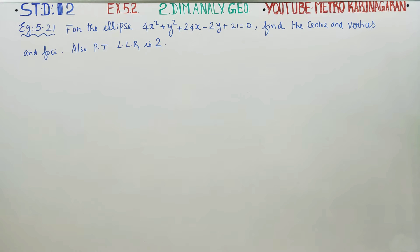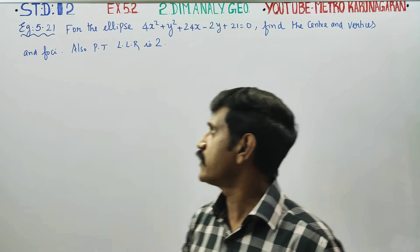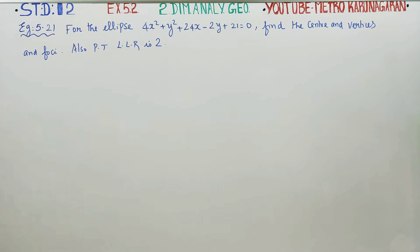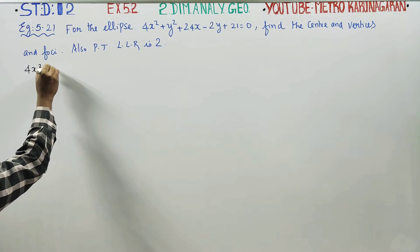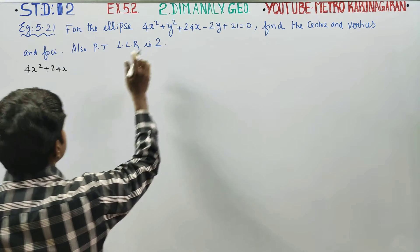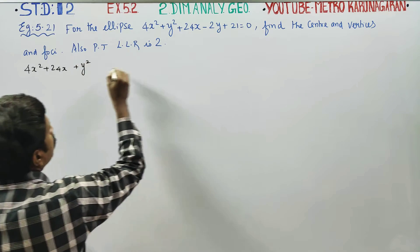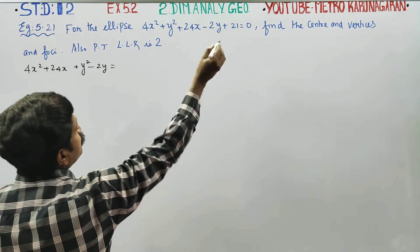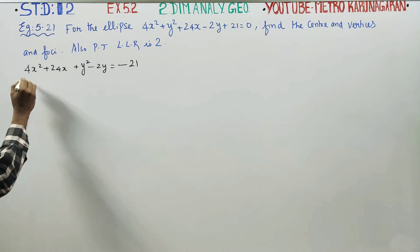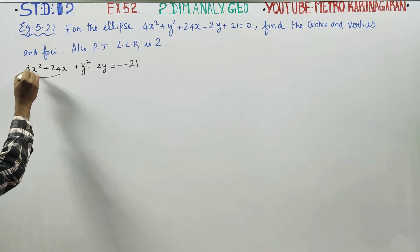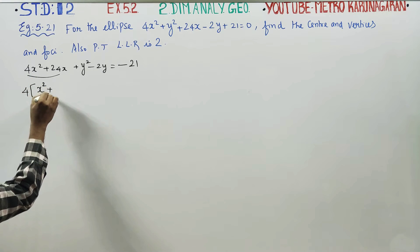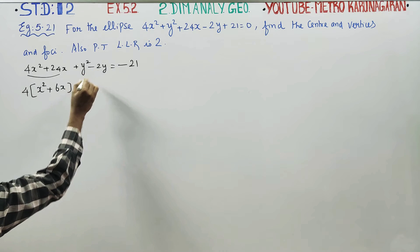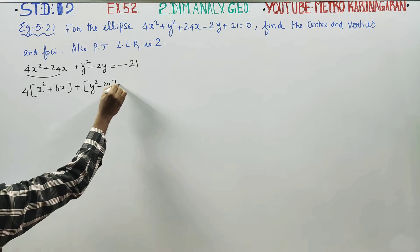Dear 12th standard students, in two-dimensional analytical geometry, Exercise 5.2, related example 5.21: for the ellipse, find the center, vertices, and foci. First of all, this ellipse is not in standard form. We have 4x² + 24x + y² - 2y = -21. We need to apply the completing the square method.